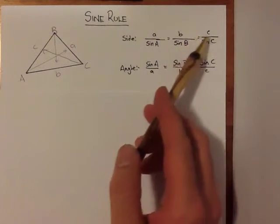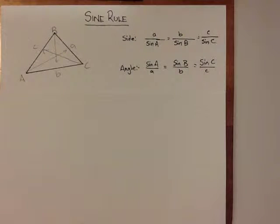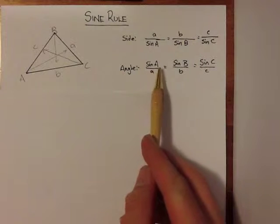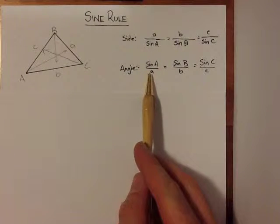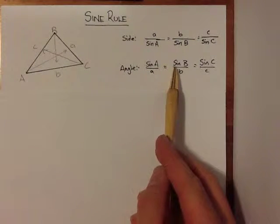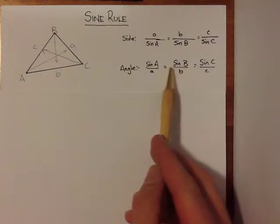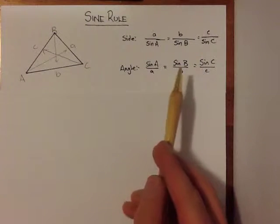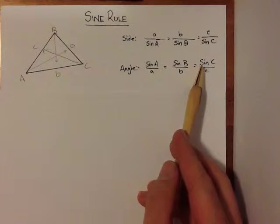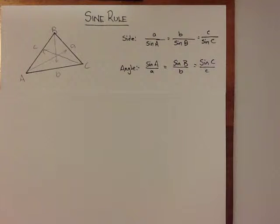The same is true for the size of an angle. Sine angle A divided by side A will give you the same answer as sine angle B divided by sine B, which will give you the same answer as sine angle C divided by side C. Let's look at an example.